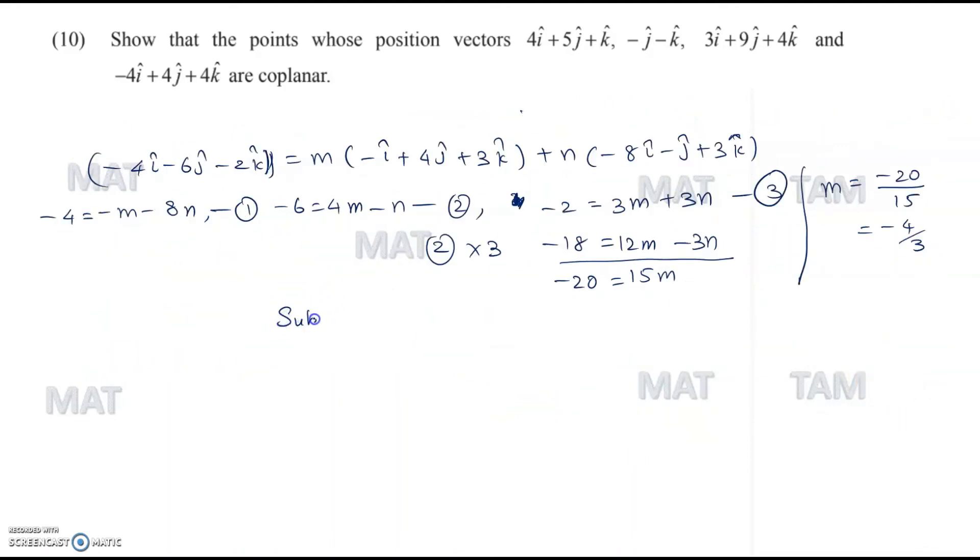Substituting M is equal to minus 4 by 3 in equation 2, we get minus 6 is equal to 4 times minus 4 by 3 minus N. This means N is equal to minus 6 plus 16 by 3, which is equal to 18 minus 16 by 3, which is 2 by 3. So we have our N as 2 by 3 and our M as minus 4 by 3.